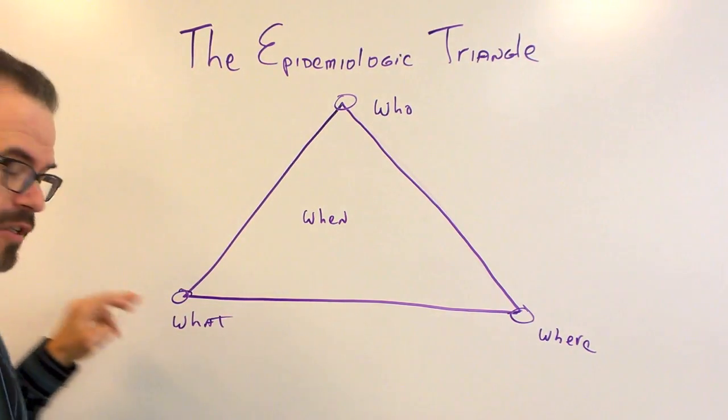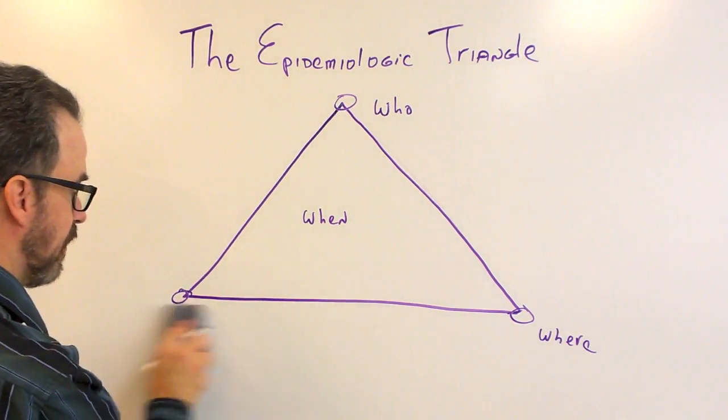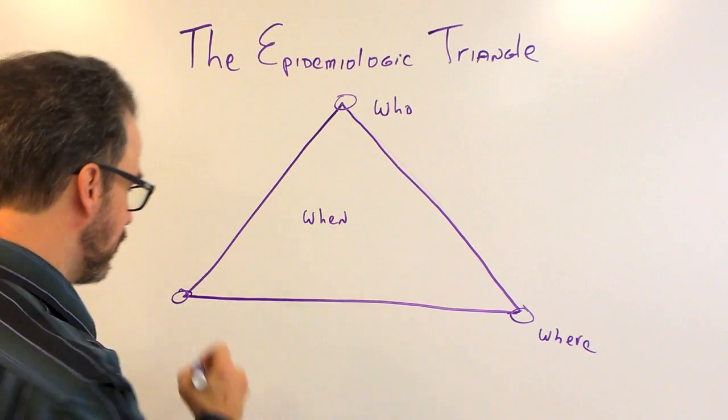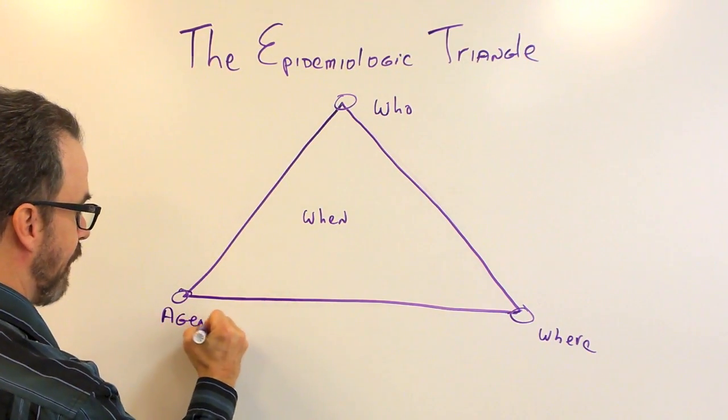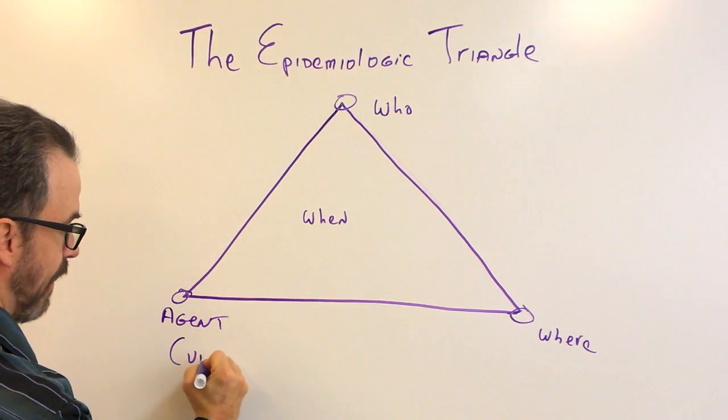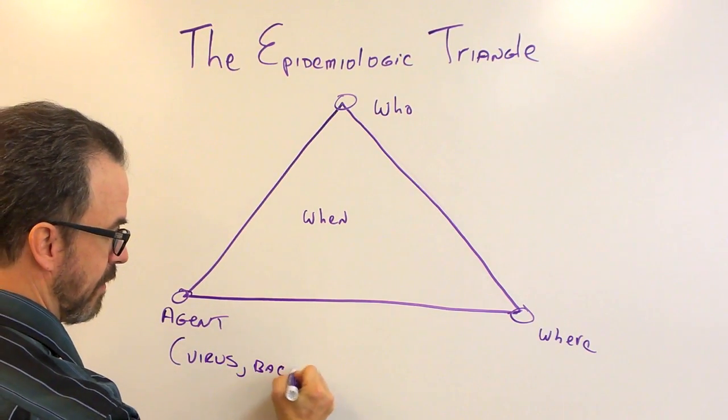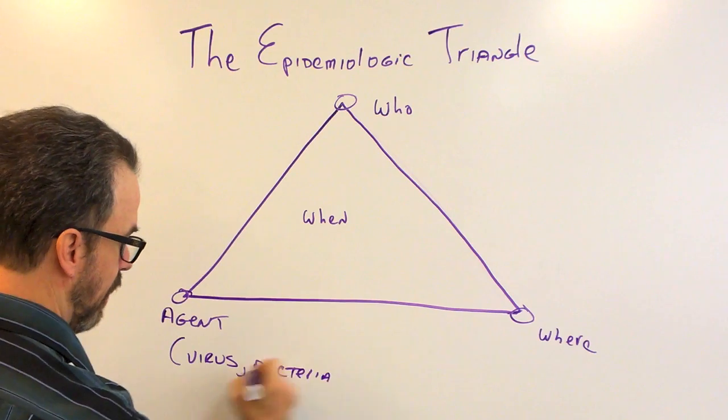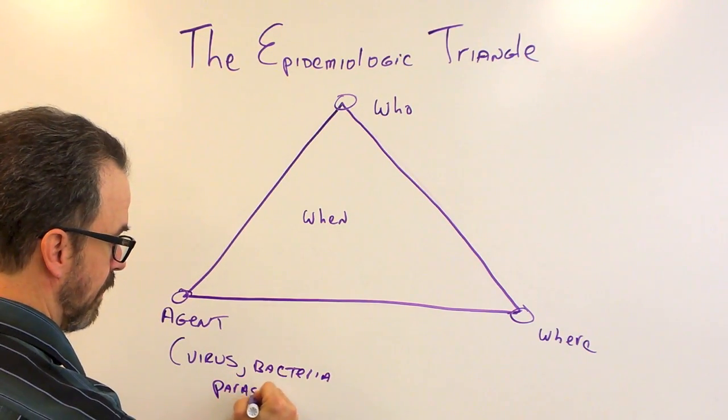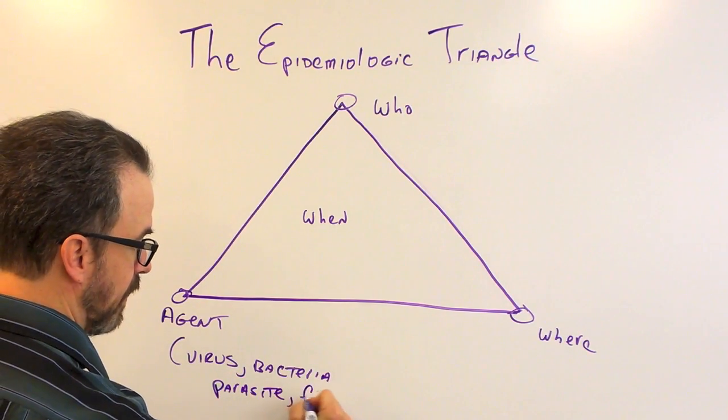In this corner, the what. What we're talking about is what agent causes the disease. So in this corner we have the term agent. And that could be a virus, a bacteria, a parasite, or a fungus.